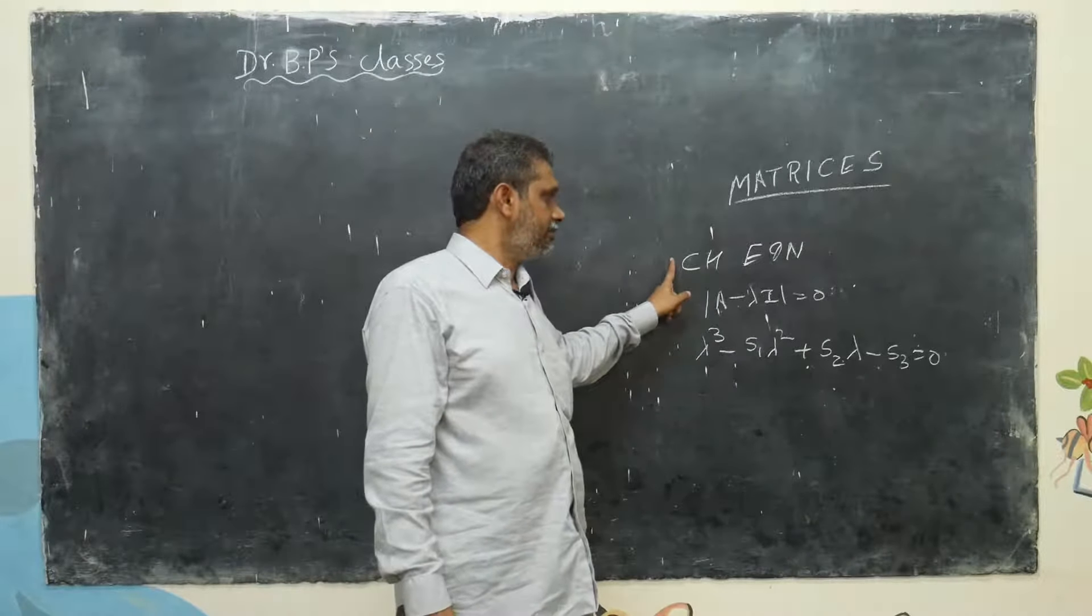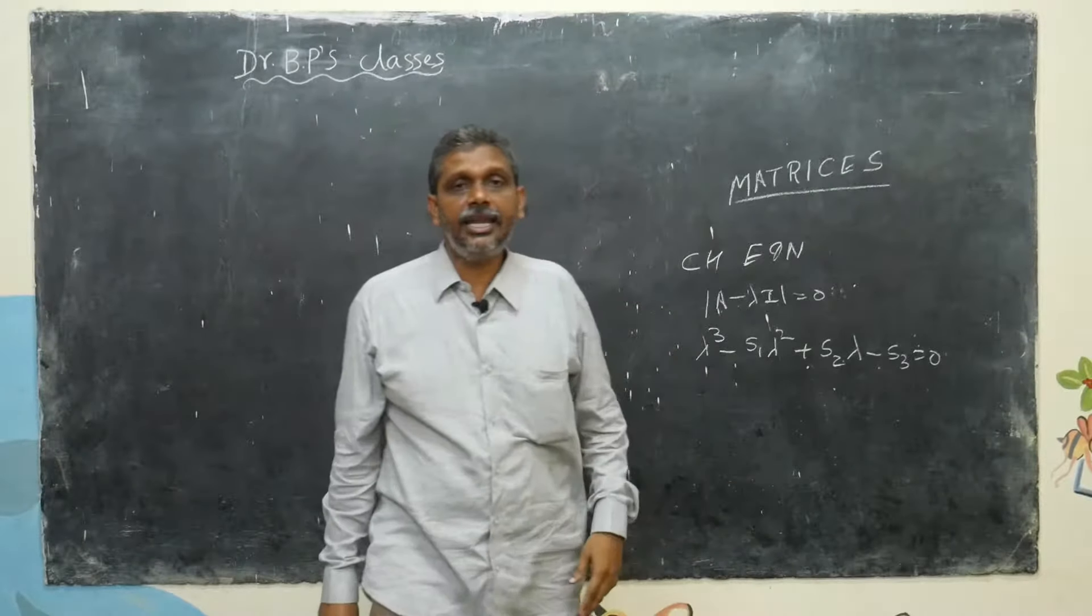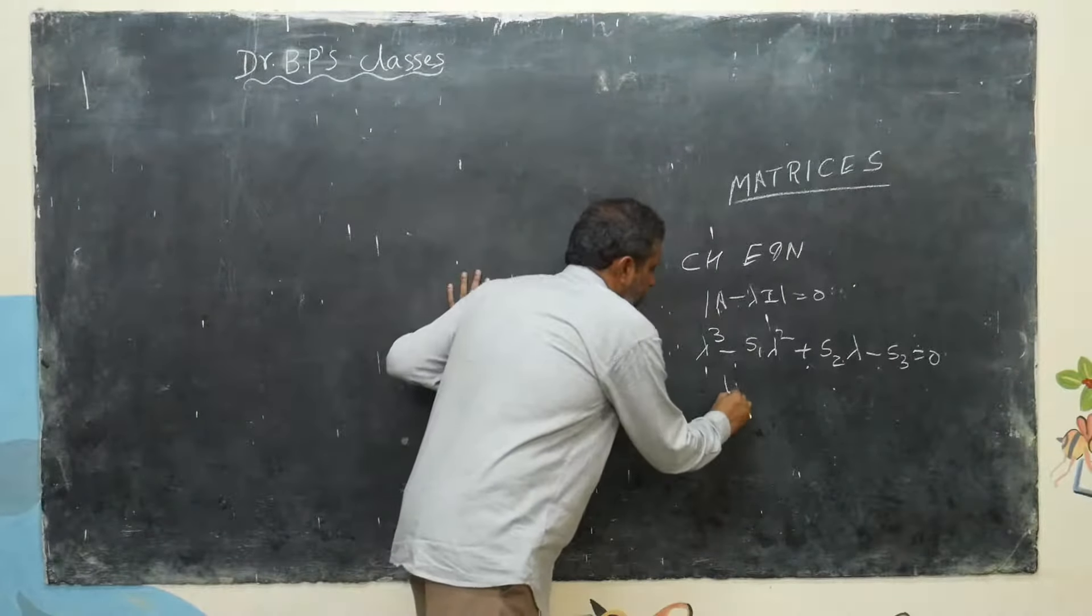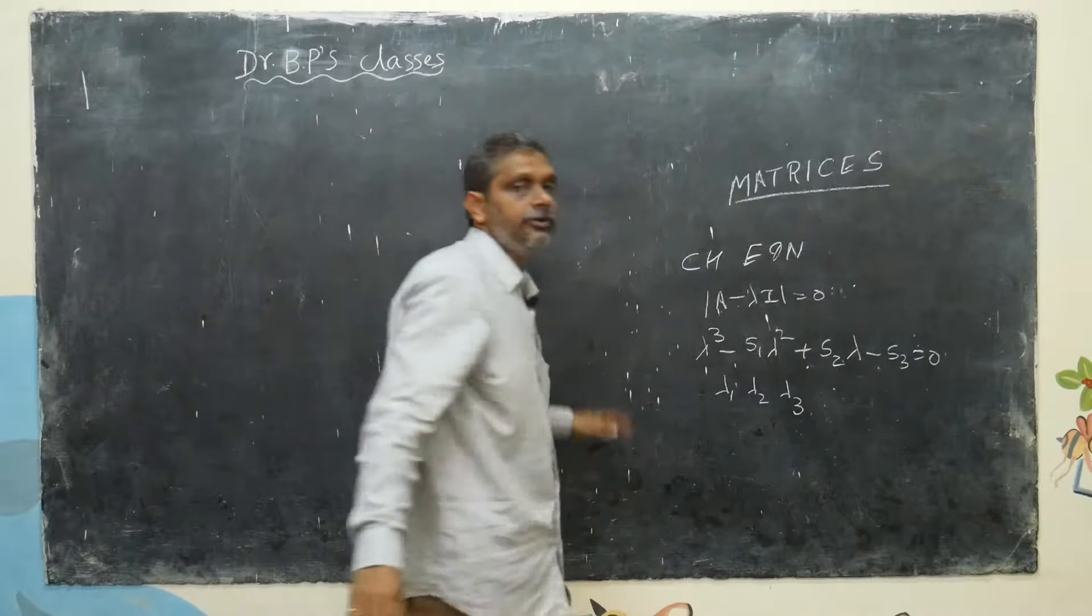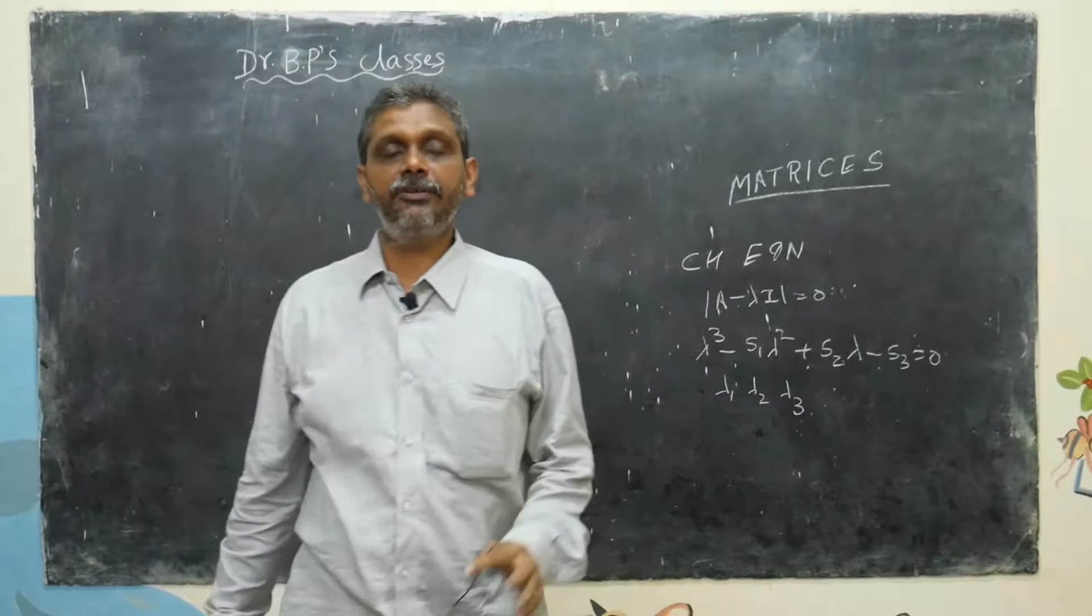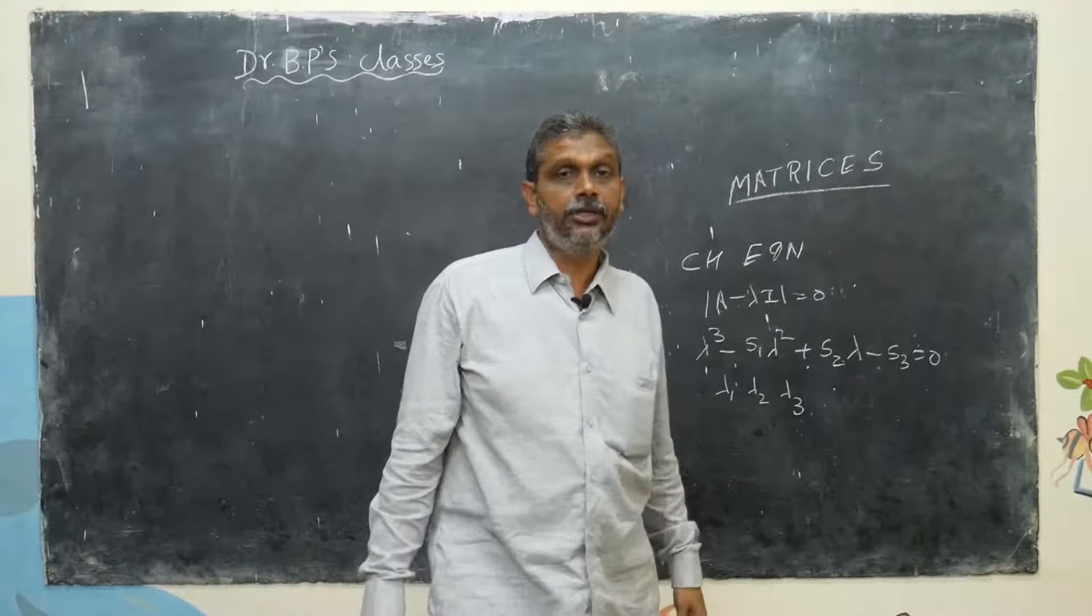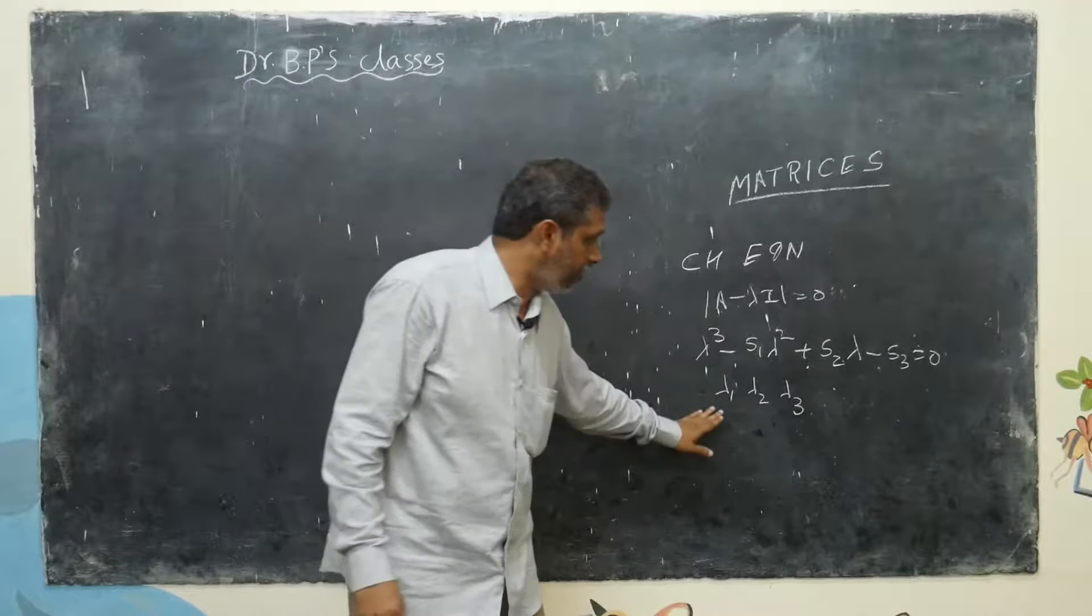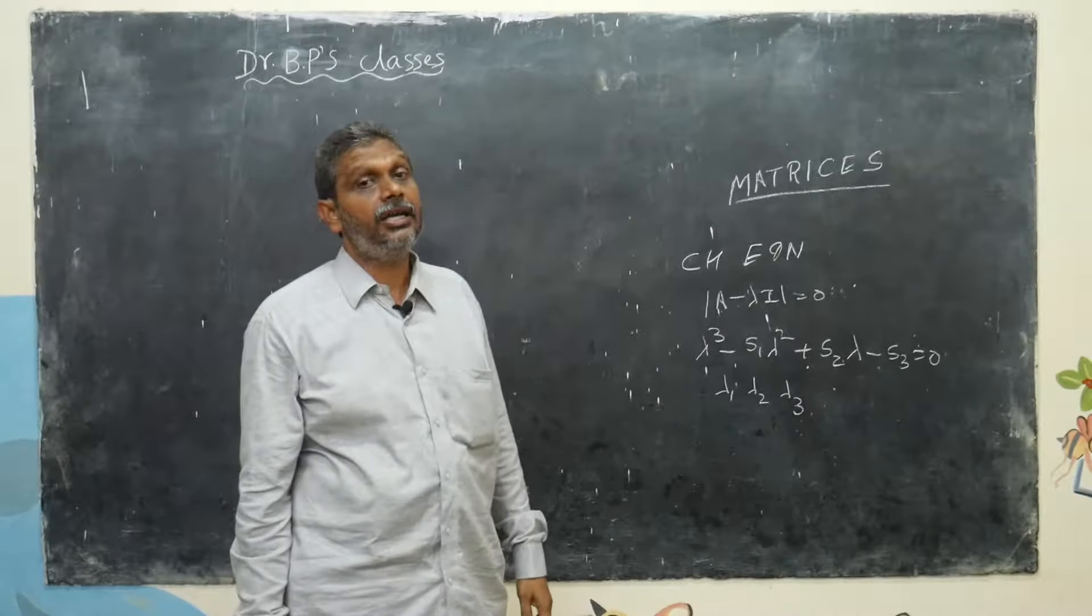Eigenvalues means characteristic equation. A minus lambda I equals zero. Once you get the lambda values, maybe I will get lambda 1, lambda 2, lambda 3. So 3 by 3 matrix means 3 I will get. 4 by 4 means 4. 5 by 5 means 5. I am assuming we deal with only 3 by 3 matrix. Once I get lambda 1, lambda 2, lambda 3, then what? I am going to find eigenvectors.